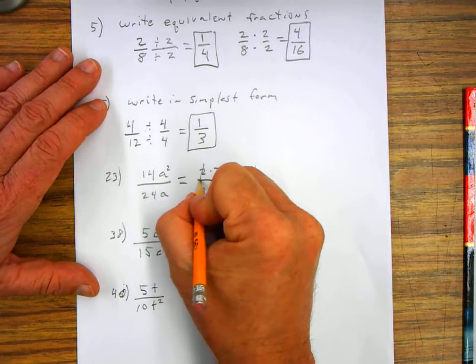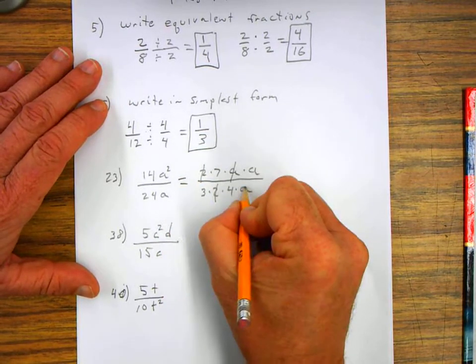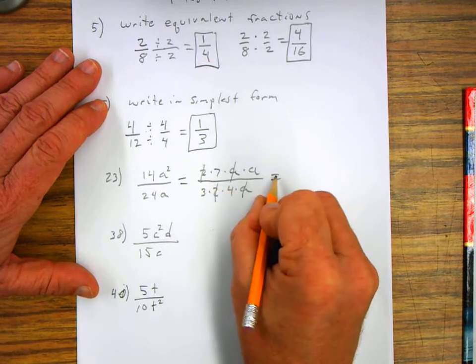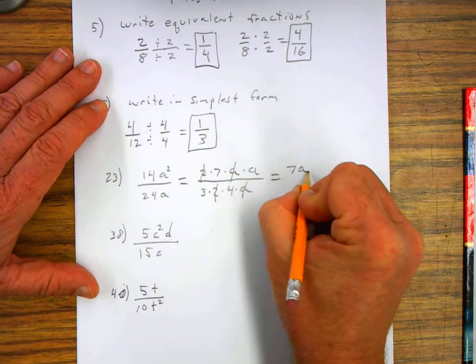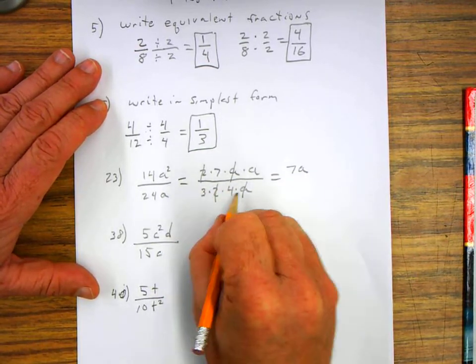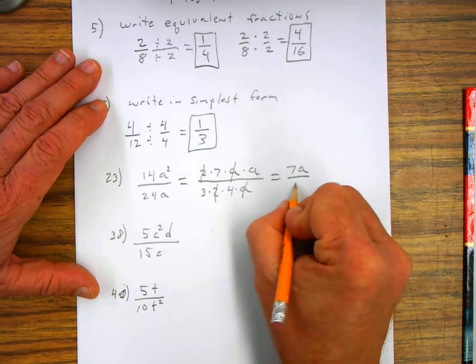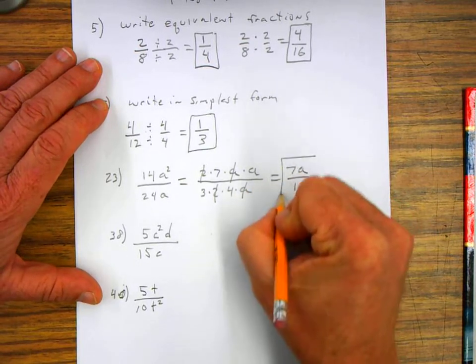So I can cancel out the twos, I can cancel out the a's, and I'm left with seven a, and then I'm left with three times four is twelve. And that's in its simplest form.